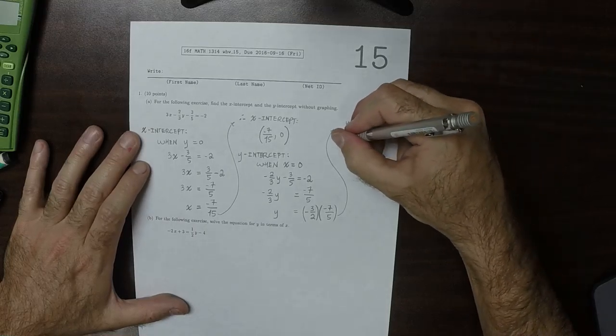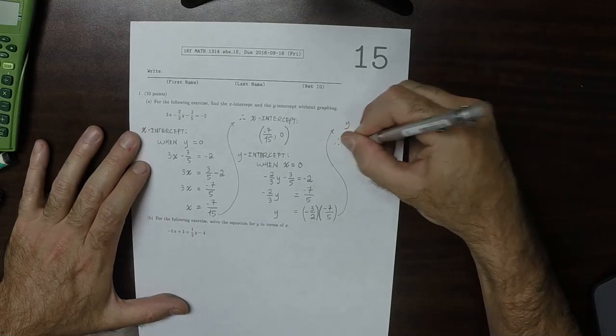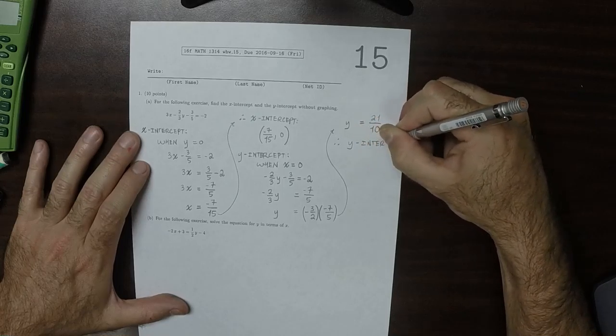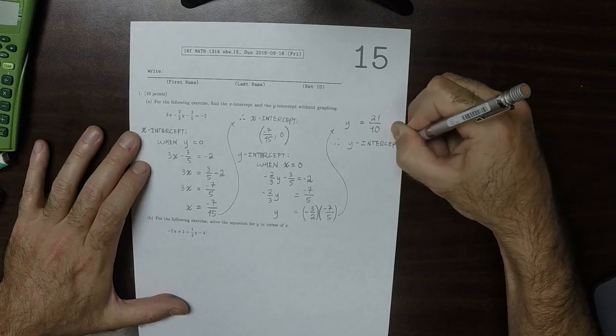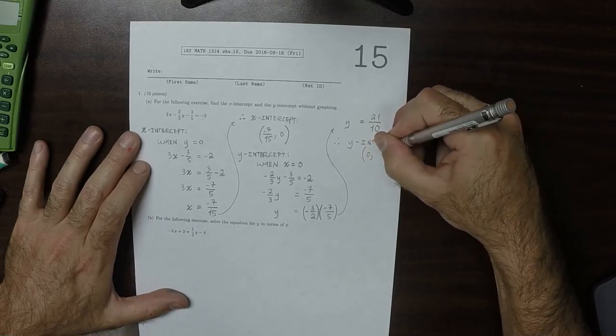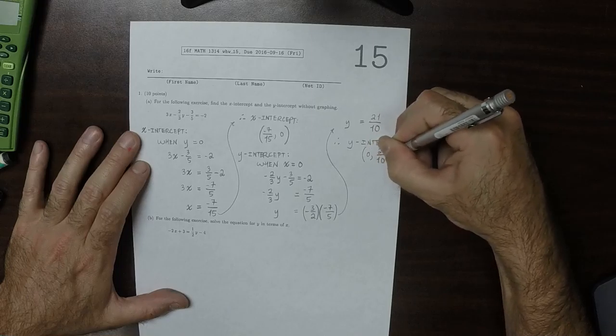And therefore, the y-intercept is the point 0, comma 21 over 10.